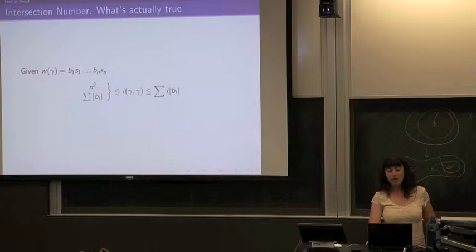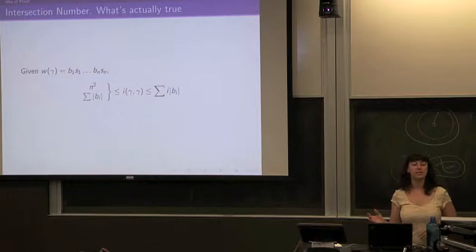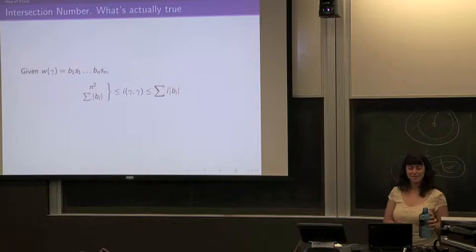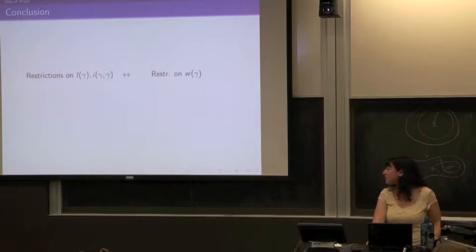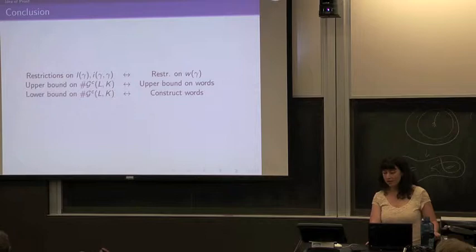Putting this together: the upper bound is kind of what you'd expect — it's a sum over the lengths, where the smaller winding numbers intersect with the bigger winding numbers. For the lower bound it doesn't quite work because you don't always have those, but you get something close enough. It's bounded both above by n² and by the sum, and these two are used in different ways. So we have restrictions on length and intersection number giving restrictions on words: an upper bound on the number of words satisfying those restrictions, and for the lower bound you just construct words.